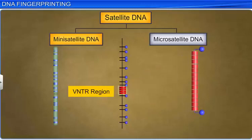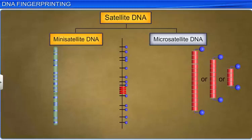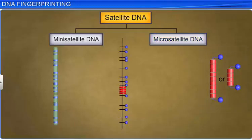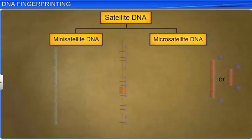Mini-satellite has sequences of 15 to 100 base pairs, repeated hundreds or thousands of times. On the other hand, micro-satellite is a section of DNA which has tandem repeats of shorter sequences of 2 to 10 base pairs. Both mini-satellite and micro-satellite DNA act as molecular markers in the DNA fingerprinting technique.